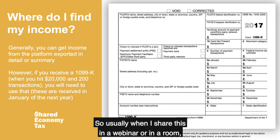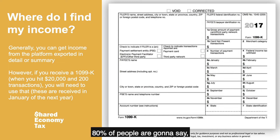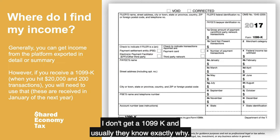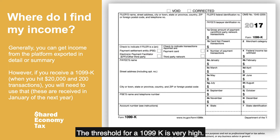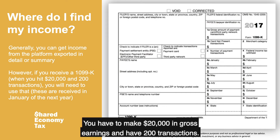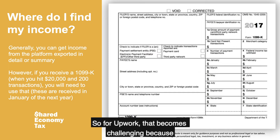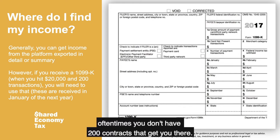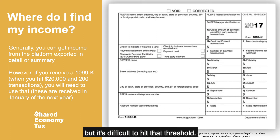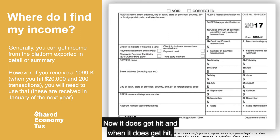Usually when I share this in a webinar or in a room, 80% of people say they don't get a 1099-K, and usually they know exactly why. The threshold for a 1099-K is very high — you have to make $20,000 in gross earnings and have 200 transactions. So for Upwork, that becomes challenging because oftentimes you don't have 200 contracts that get you to that threshold.